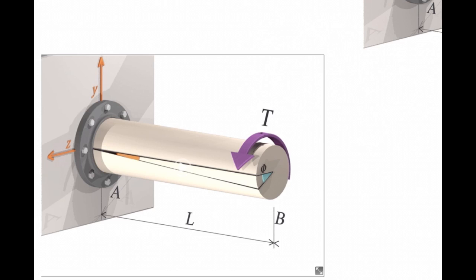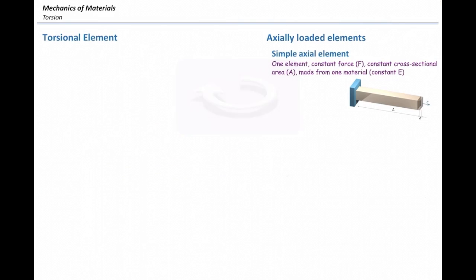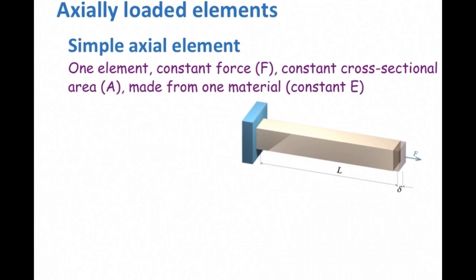I'm going to give you the equation to determine how much is phi, or angle of twist, in torsional elements. Before that, let me show you the equations that we had previously for axially loaded elements. What is the deformation for this element? Exactly, delta is FL over EA.